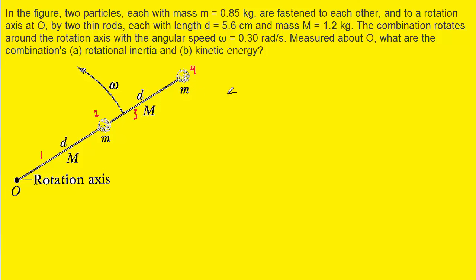The total rotational inertia of this system is going to equal the rotational inertia of each object added together. So we're going to have I1 plus I2, all the way up to I4.